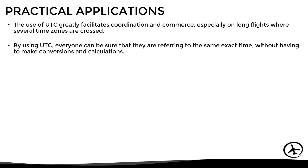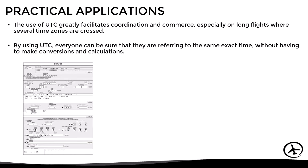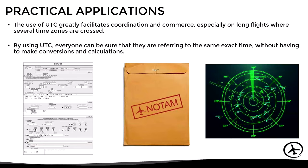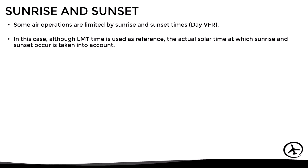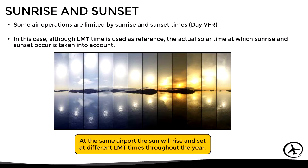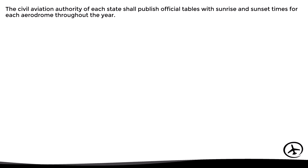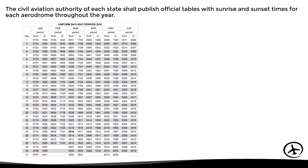By using UTC, everyone can be sure they are referring to the same exact time without having to make conversions, which is very useful for flight plans, NOTAMs, radio communications, and many other aviation applications. An important time to keep in mind is the time of sunrise and sunset for a specific airport, since some air operations are limited to daytime. Although the local time of the time zone is used as reference, the actual solar time at which sunrise and sunset occur at that specific position is taken into account. The sun will rise and set at different local times throughout the year at the same airport.